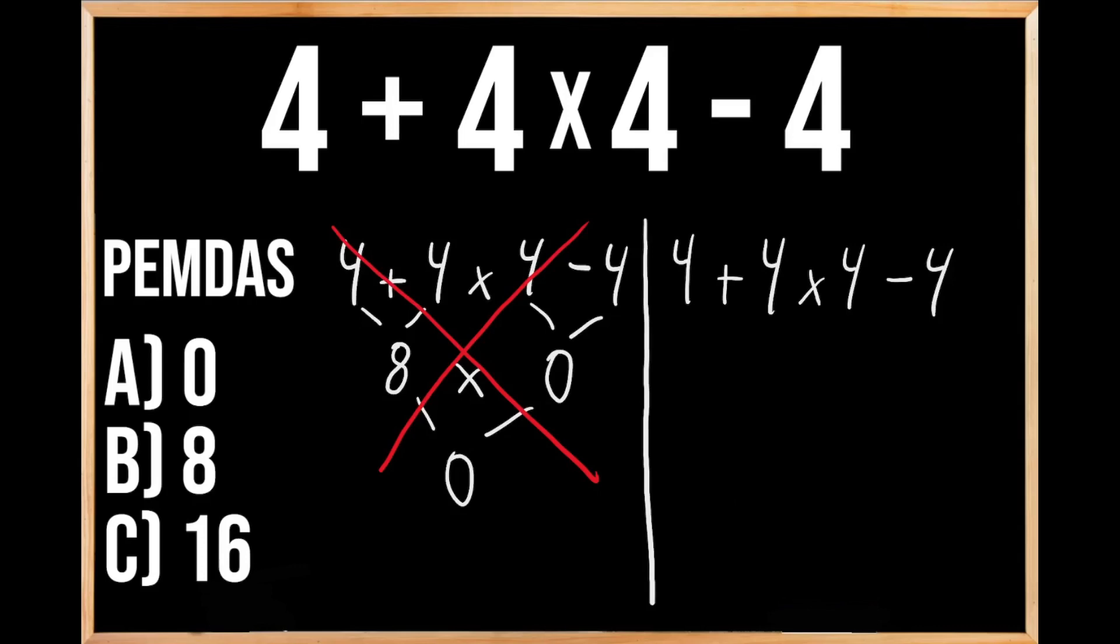So we're going to start out by multiplying 4 times 4, which we know is going to give us 16, and then we're going to bring down the rest of this problem.